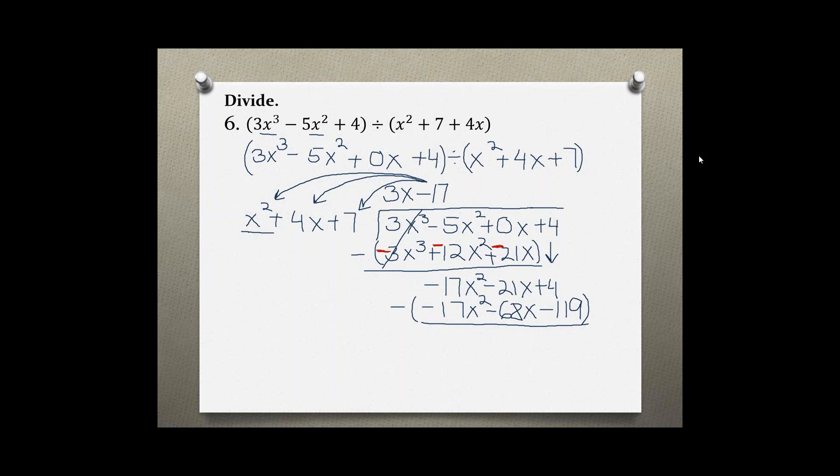Subtracting, which changes the signs, we get negative 17x squared plus 17x squared, which is 0. Negative 21x plus 68x, which is 47x. And 4 plus 119, which is plus 123.